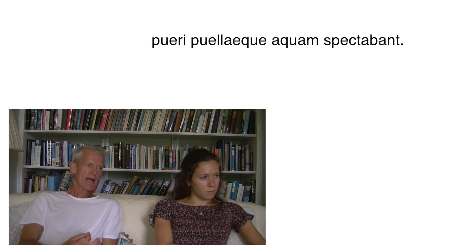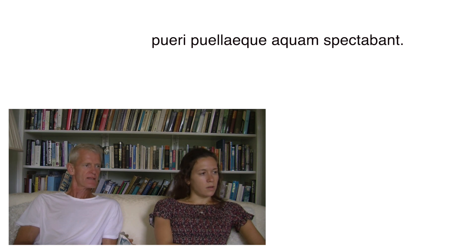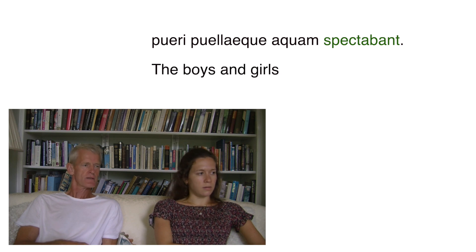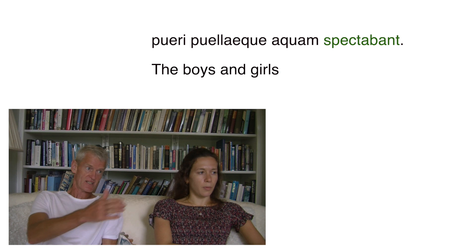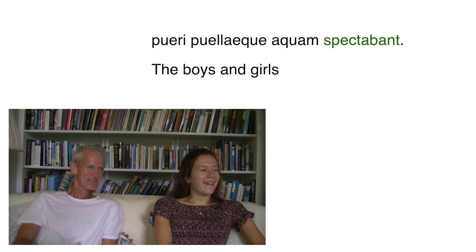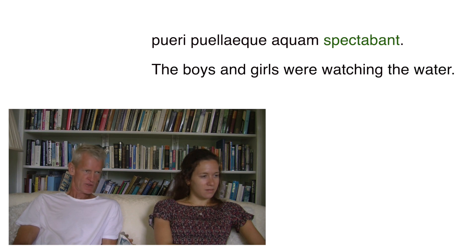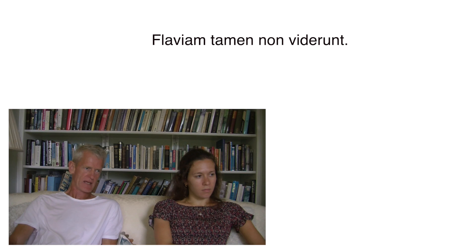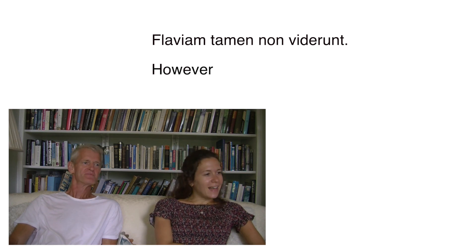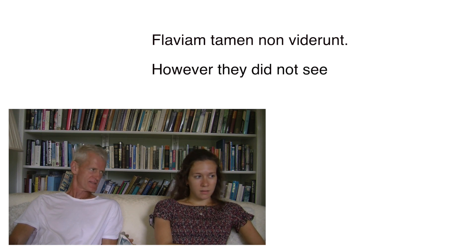'Pueri puellaeque aquam spectabant' — the verb 'spectabant,' they were watching. The subject is 'pueri puellaeque' — the boys and the girls (using que for 'and'). They were watching the water. Then 'Flaviam tamen non viderunt' — however they did not see Flavia. A nightmare: Flavia has gone into the water, they're looking but they can't see her.